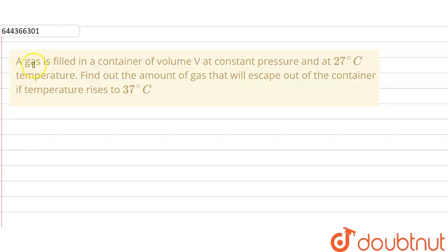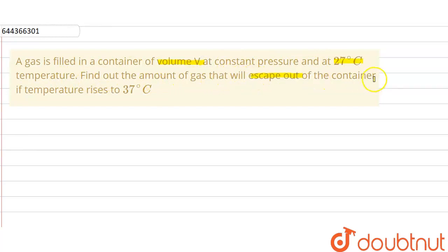The question is: a gas is filled in a container of volume V at constant pressure at 27 degree Celsius temperature. Find out the amount of gas that will escape out of the container if the temperature rises to 37 degree Celsius.